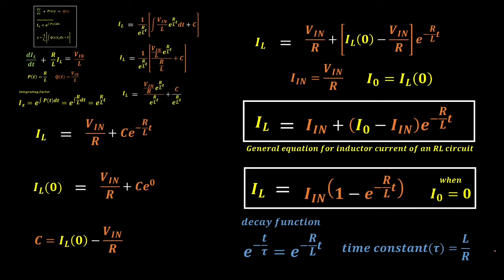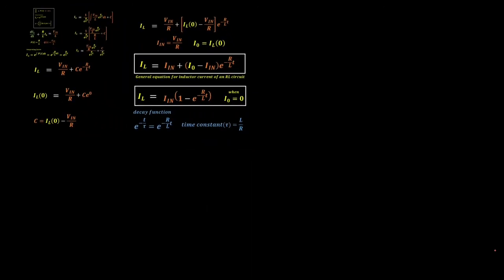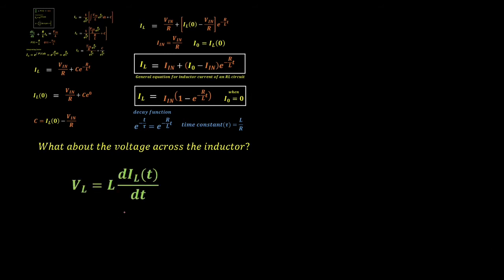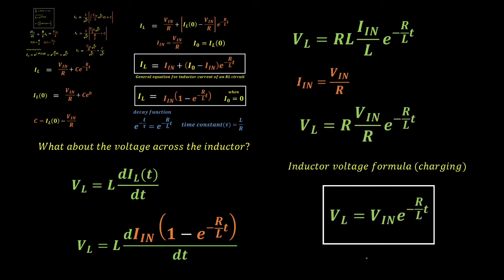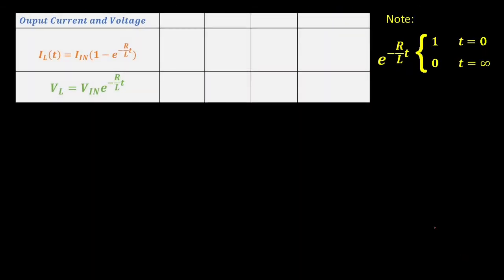Now that we have the current equation, the voltage across the inductor is given by V_L = L·dI/dt. By differentiating our inductor current, we get the voltage across the inductor equal to the input voltage multiplied by e raised to −(R/L)·t. I have prepared a table to get the expected output at time less than 0, time equal to 0, time equal to infinity, and time between 0 and infinity. The exponential term at time equal to 0 is 1, and at time equal to infinity, it decays to 0.